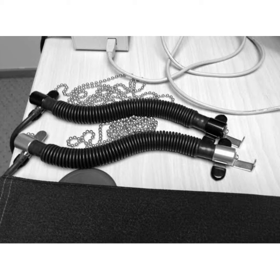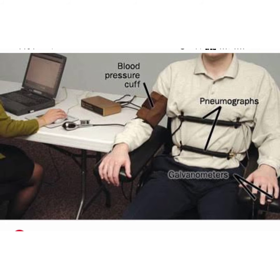For example, here we are using a strain gauge as the transducer, which is connected in a Wheatstone bridge. The bridge output varies with the chest expansion and the signals are obtained corresponding to respiratory activity.